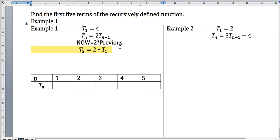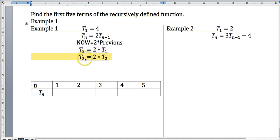And so what that means for us is that t sub two, which would be this term right here, is equal to two times t sub one. And so if I put this in, and t sub three is equal to two times t sub two, and so on. So if I put this in here, this is my first term which is four.